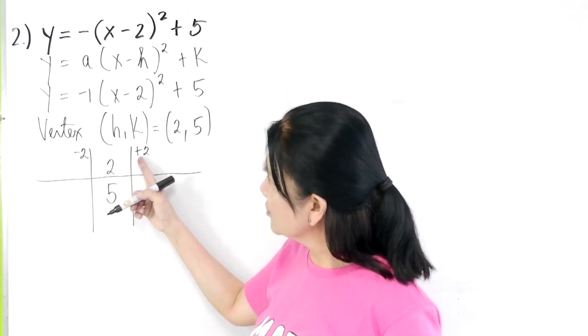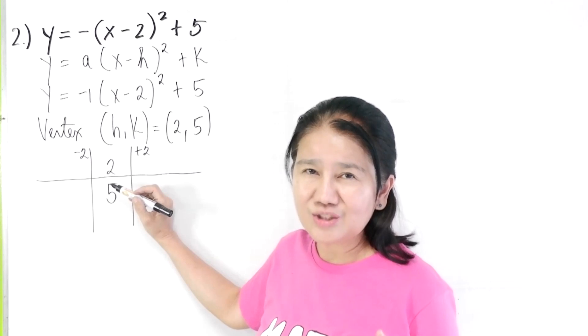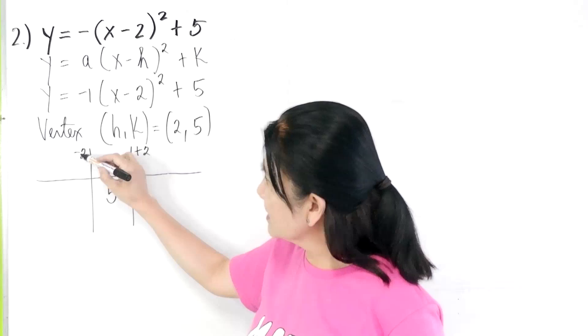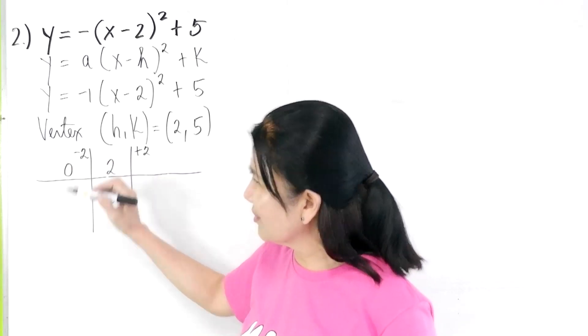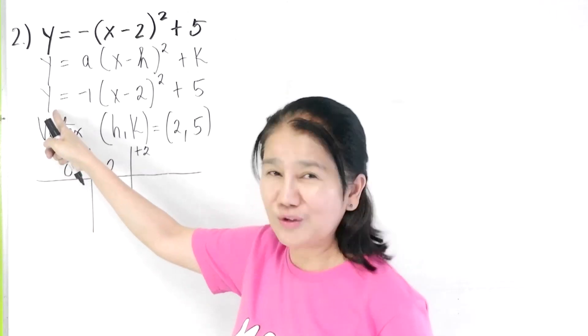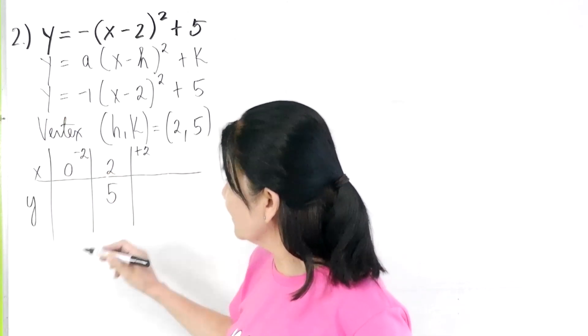We add this and subtract the same value. Why am I choosing plus two and negative two? Because I want to take a shortcut, because if I add two plus negative two, it will give me a zero. And you know, when x is zero, it is very easy to solve for y. These are the x values and the y values.